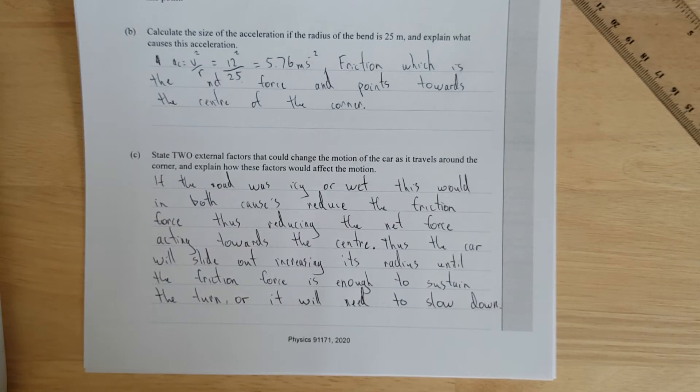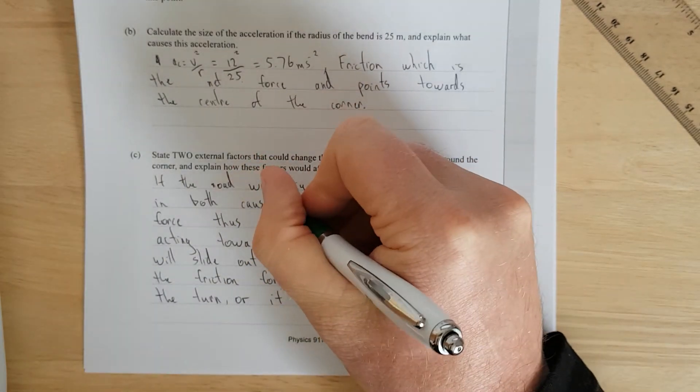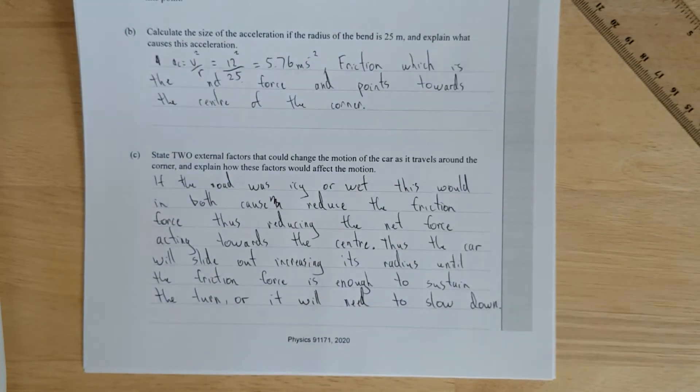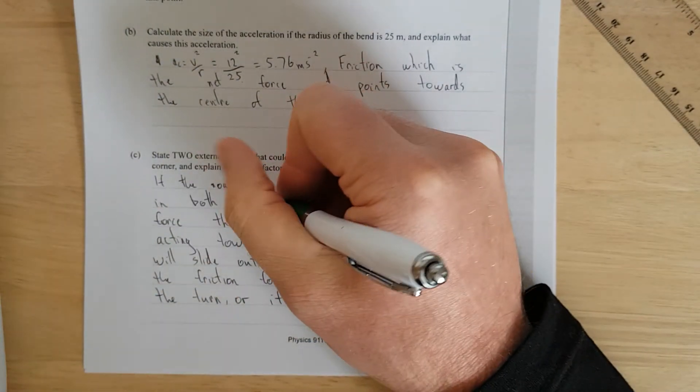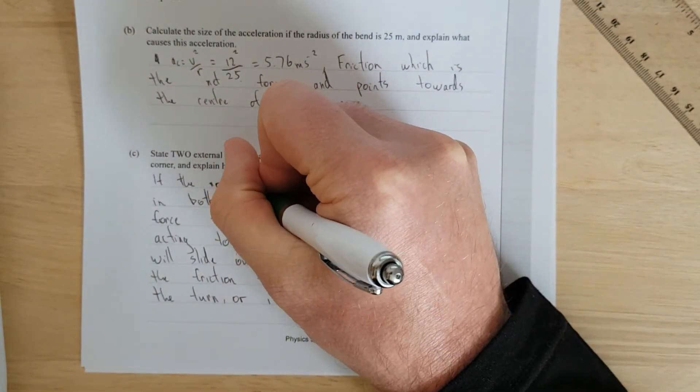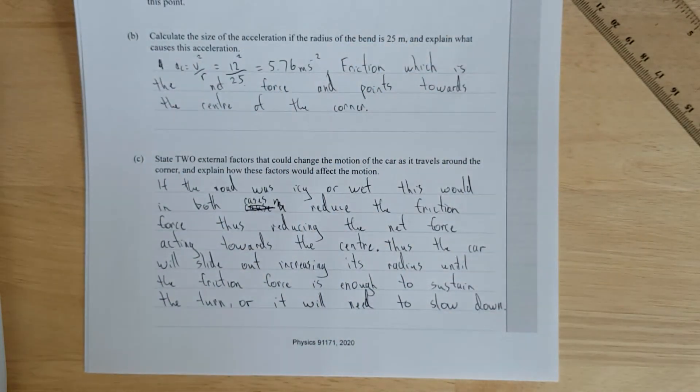Right. So, I said, if the road was icy or wet, this would both cause, this would in both cases reduce the friction force, thus reducing the net force acting towards the center. Thus, the car will slide out, increasing its radius, until the friction force is enough to sustain the turn, or it'll need to slow down, both of which are true.